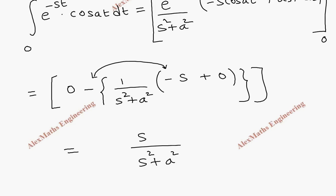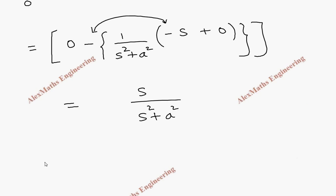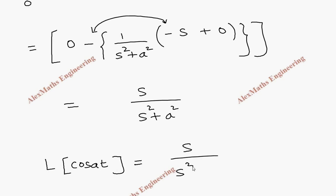Thus we have obtained the Laplace transform of cos(at), which is s divided by s² + a², where the value of s is considered greater than 0.